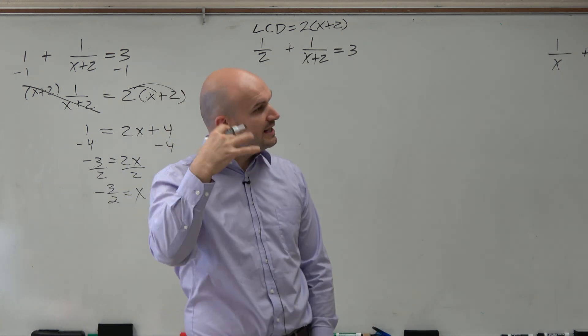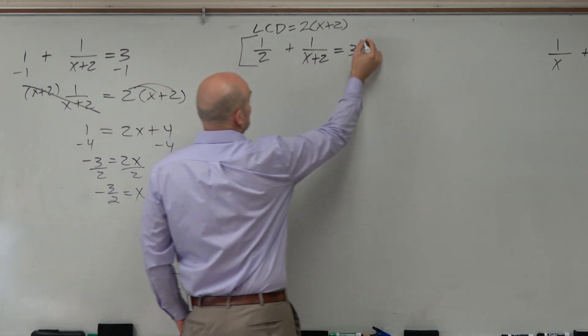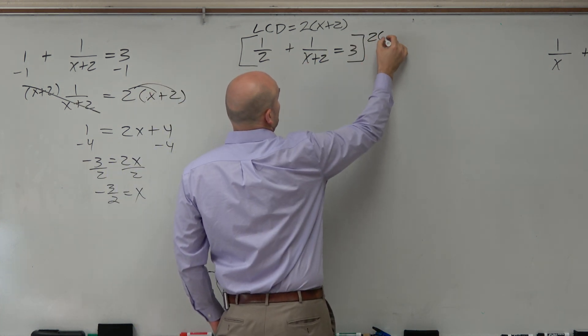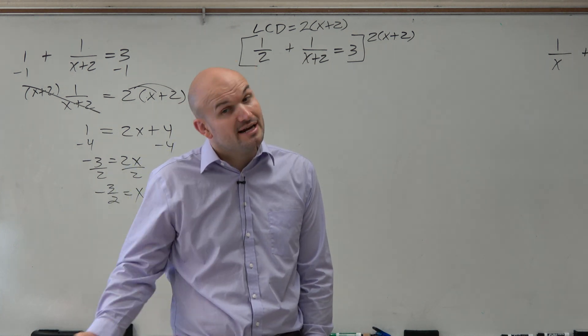If I want to get rid of my denominator, I'm going to multiply everything times 2 times x plus 2. Everything. Because if you don't multiply everything, it's not an equation.